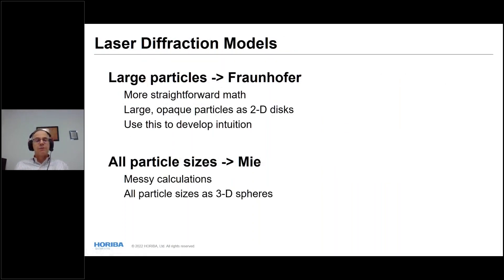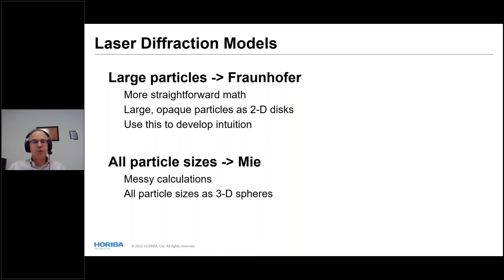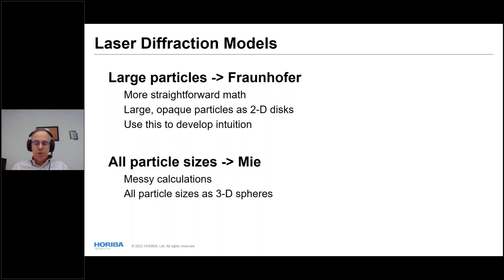Fraunhofer is more straightforward math and works for large opaque particles, treating them as two-dimensional disks. It's useful for building intuition. Mie scattering is a much more exact treatment applicable for all particle sizes. It treats particles as three-dimensional objects and accounts for what happens to light inside the particle — particularly important as particle size decreases.